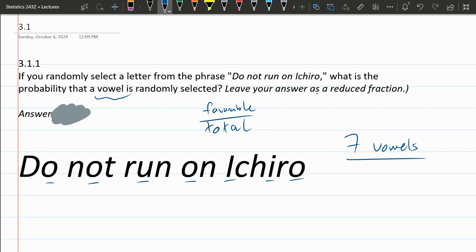So now I need to know how many letters are total. So we have 2, 2, and 3 is 5, 6, 7, 8, 9, 10, 11, 12, 13, 14, 15, 16.